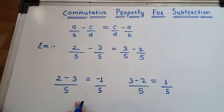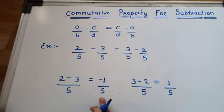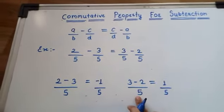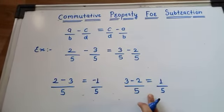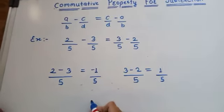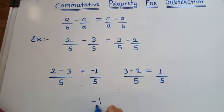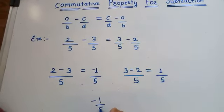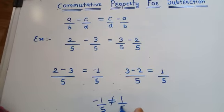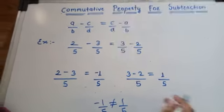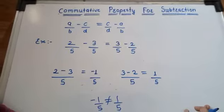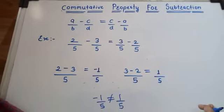2 minus 3 by 5 is equal to minus 1 by 5, and 3 minus 2 by 5 is equal to 1 by 5. Since minus 1 by 5 is not equal to 1 by 5, we can say that commutative property is not applicable for subtraction.